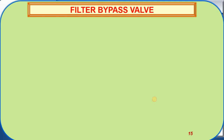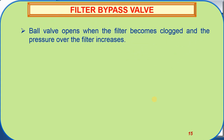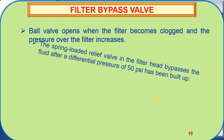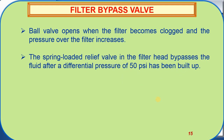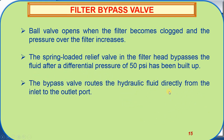The filter bypass valve opens when the filter becomes plugged and the pressure across the filter increases. The spring-loaded relief valve in the filter head assembly opens after a differential pressure of 50 psi has been built up. The bypass valve routes the hydraulic fluid directly from the inlet to the outlet port.